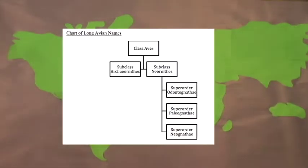Now we have the class Aves, which all birds belong to. This is where it gets kind of confusing with really long names, so we're going to use a chart.